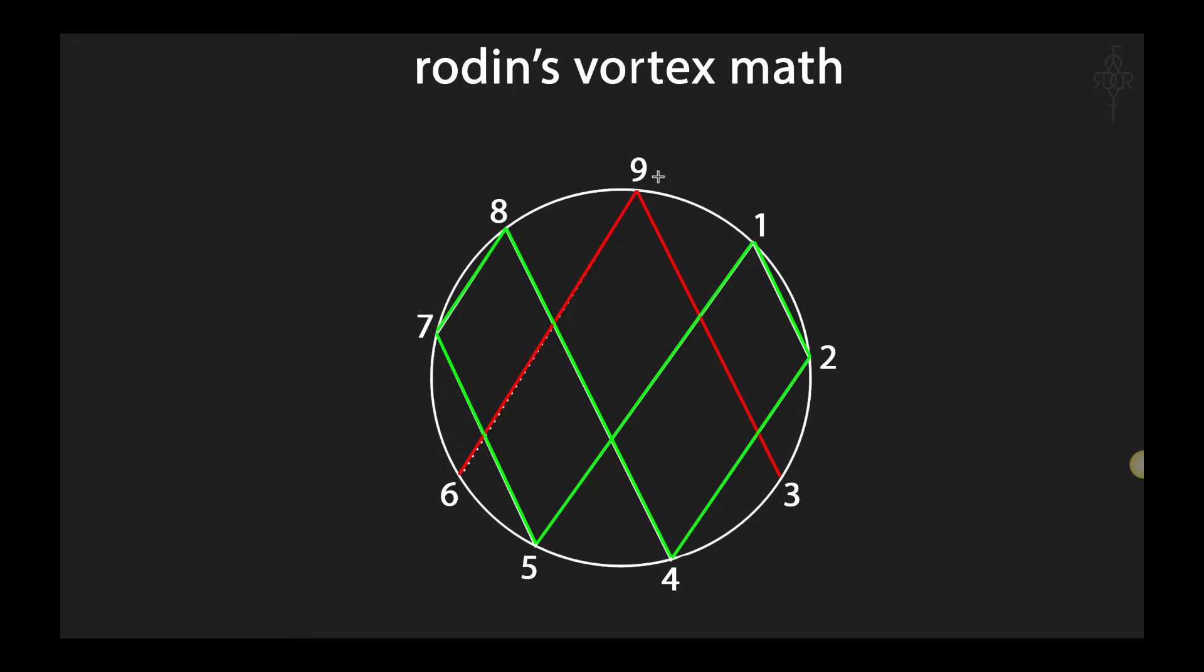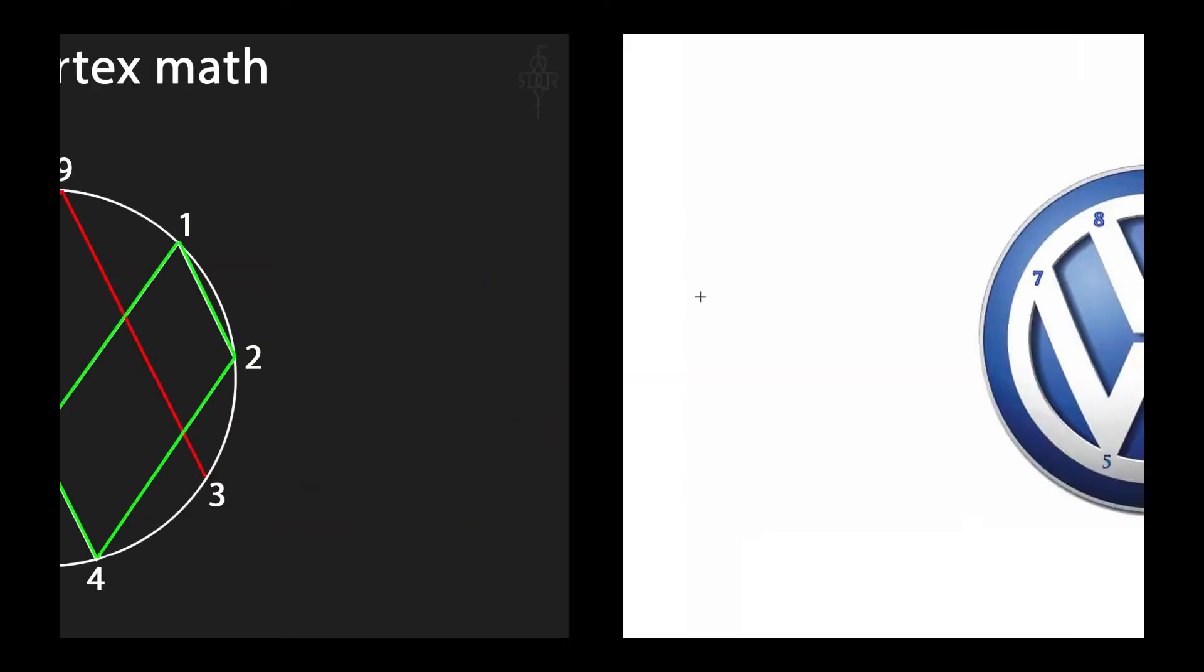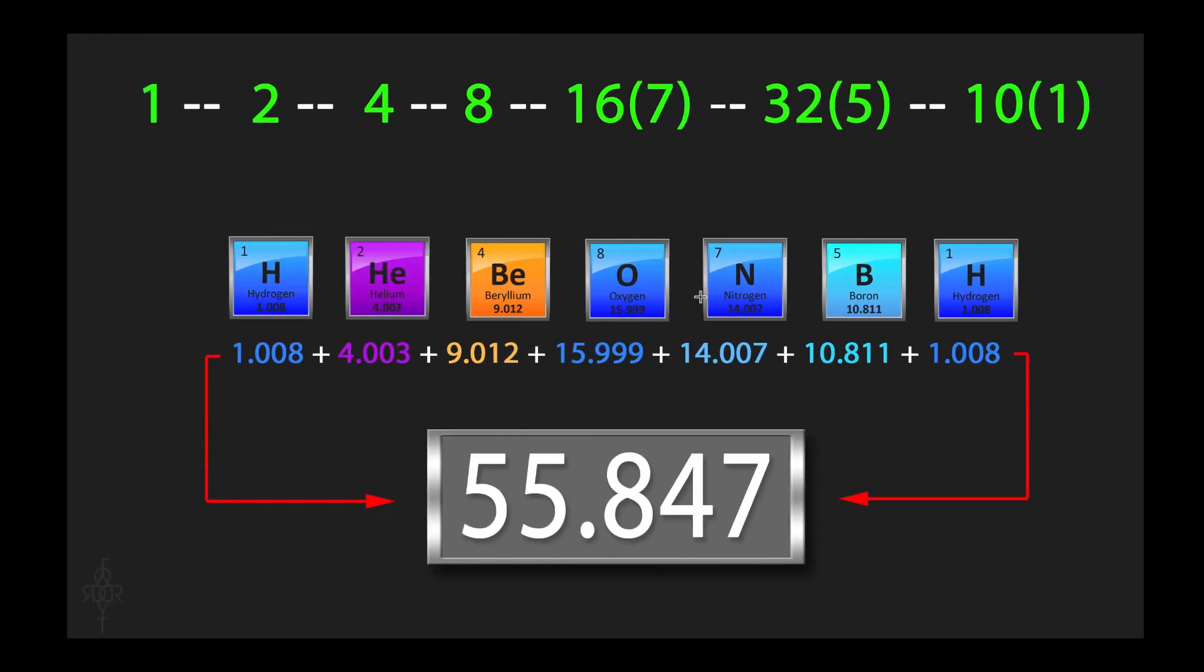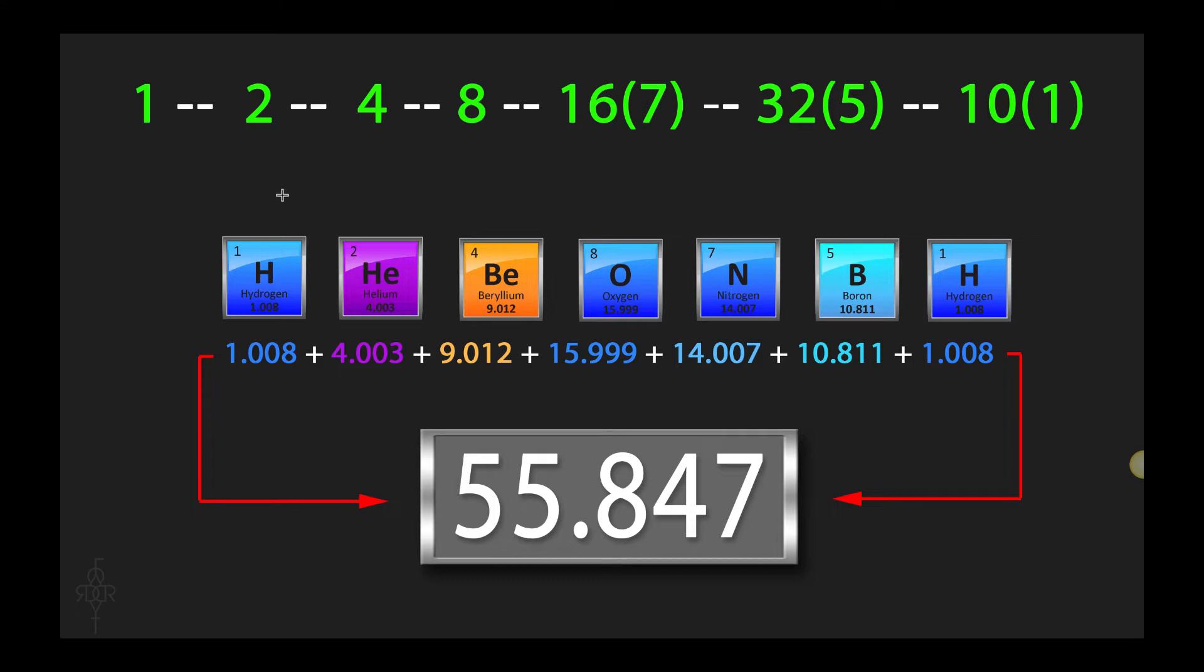So it goes 1, 2, 4, 8, 7, 5, 1. That's the pattern in nature that it follows when you're duplicating things. 1 becomes 2, 2 becomes 4, 4 becomes 8, 8 becomes 16 which becomes a 7, and then 32 becomes a 5. 3 plus 2 is 5. And then the 5 plus 5 is 10 and it goes back down to 1. So this is just a loop. It just keeps looping. And I'm going to give you guys a little inside scoop on this: This is our DNA.